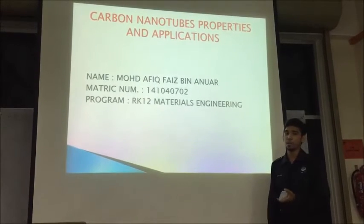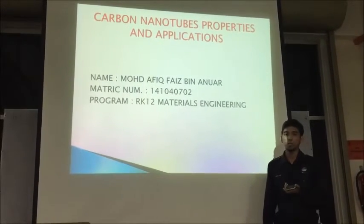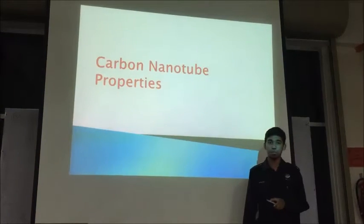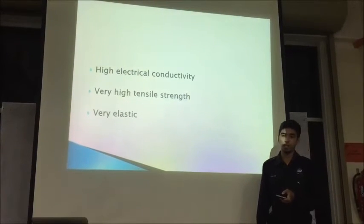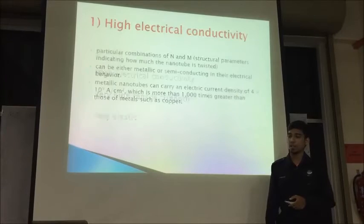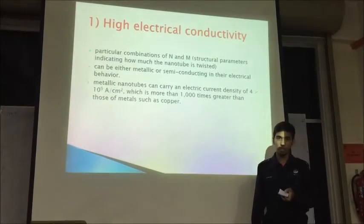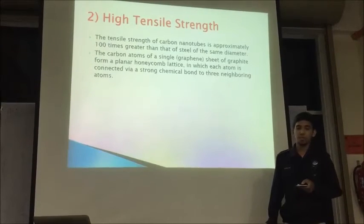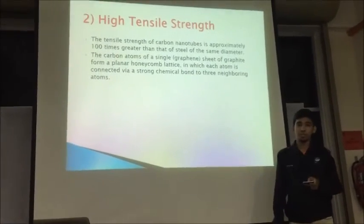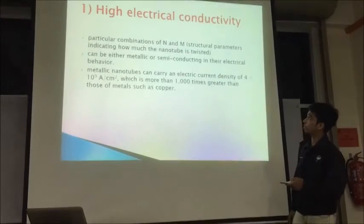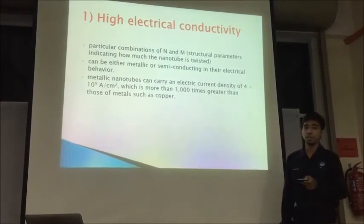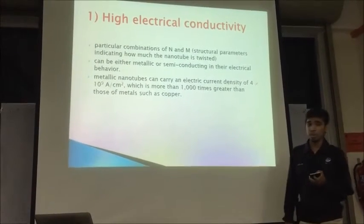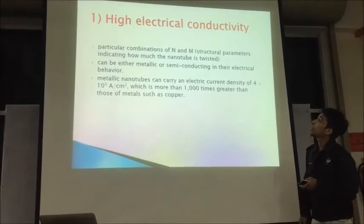My name is Omar Fahish Bin Anwar. Today I will present CNT's applications and its properties. First, we look at the properties. It has several properties: high electrical conductivity, very high tensile strength, and very elastic. Regarding high electrical conductivity, it is determined by a particular combination of n and m structural parameters indicating how much the nanotube is twisted. For n equal to m, it shows the carbon tube is metallic, while if m is a multiple of 3, it shows a semiconductive carbon tube.